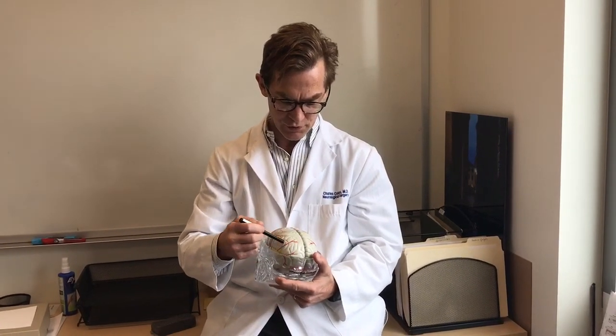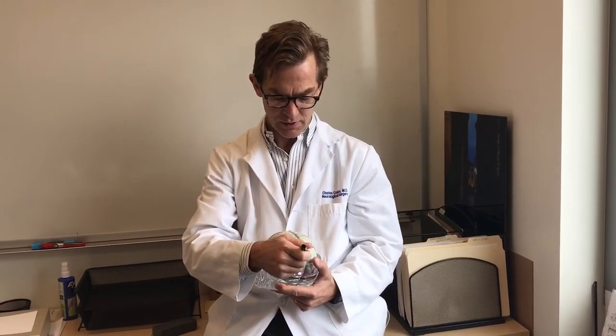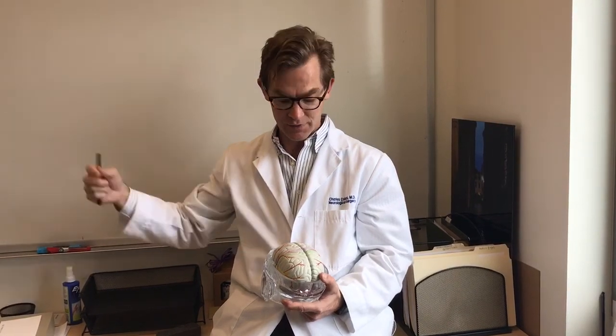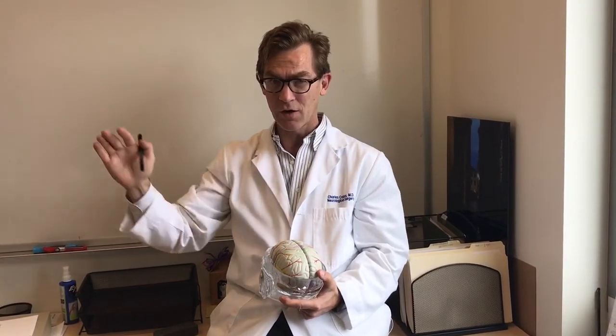Often if you have a tumor pushing down in this area, it'll mess up the visual pathways. This occipital lobe controls everything from the middle over on the opposite side of the body, so left occipital controls from the middle over to the right, all the vision.